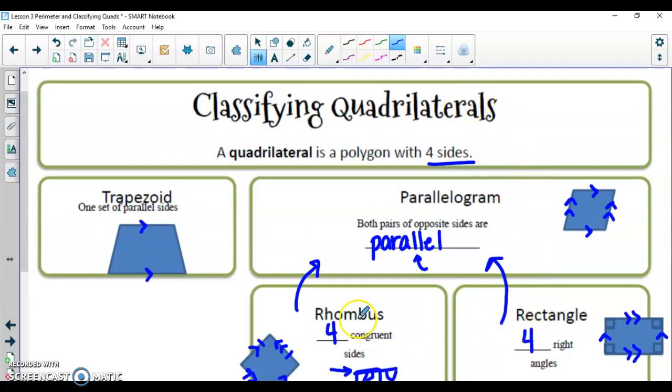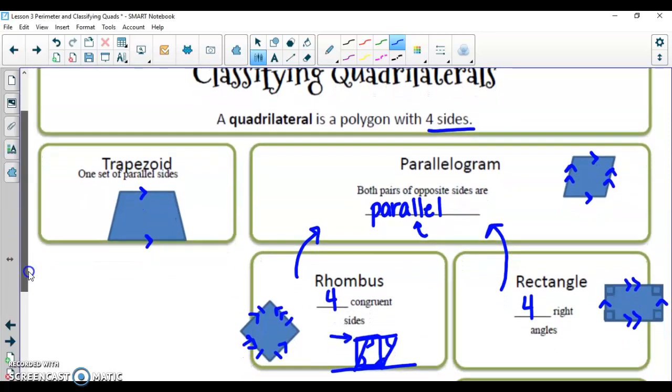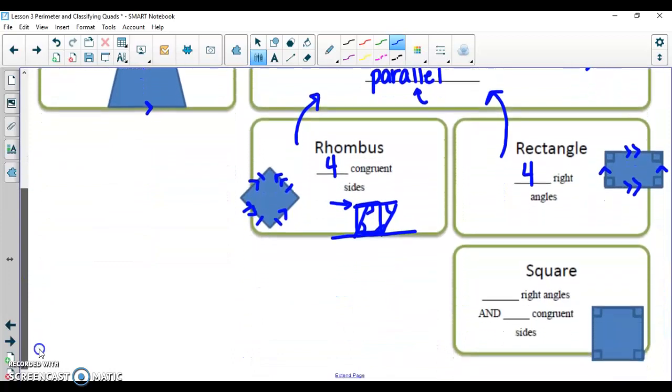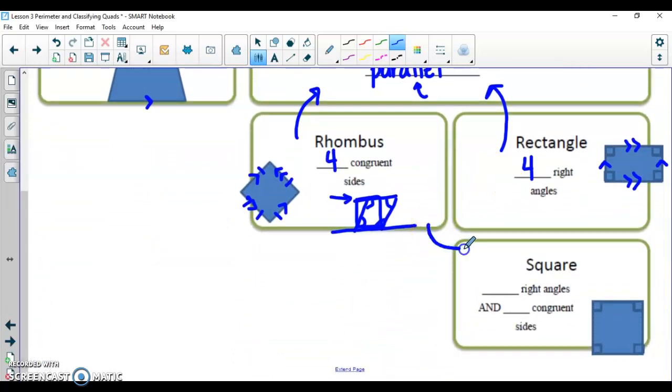As we go down the list, we're getting more and more specialized here, but the names that are above still stand. The final most specialized one is what happens when we have a rectangle and a rhombus, excuse me, they create a square. We have four right angles and four congruent sides. So all of these sides are going to be the same length, and we also have the qualities of a parallelogram because both sets of opposite sides are parallel to each other. So a square is a type of rectangle. A square is a type of rhombus. A square is a type of parallelogram, and a square is also a type of quadrilateral.